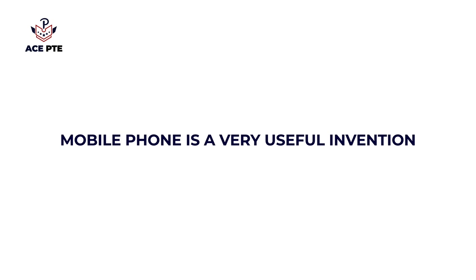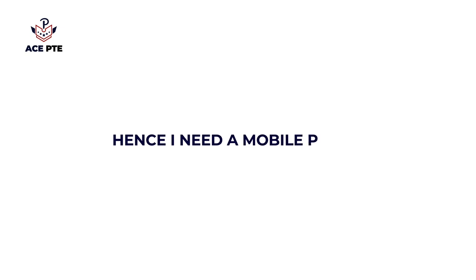For example, if a sentence says 'Mobile phone is a very useful invention', that is a general statement with the indefinite article 'a', so it can be an introduction. The next sentence might say 'I need a mobile phone' — notice how the article shifts. This article-based clue helps us sequence sentences from general to specific.